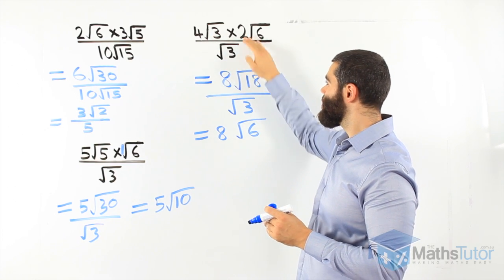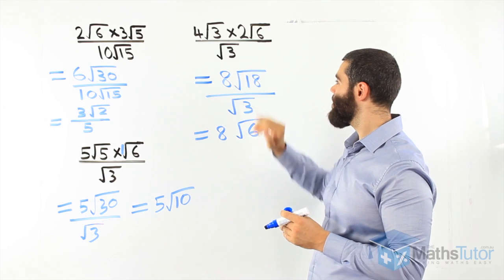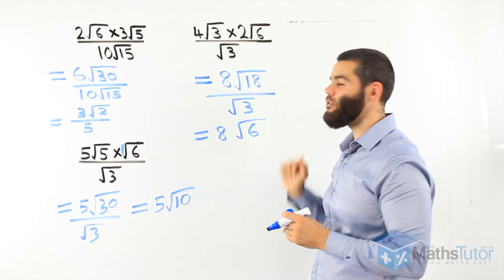Start with the numerators. Finish them off. Divide by the surd in the denominator or divide by the denominator and you'll get your answer.